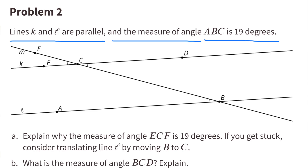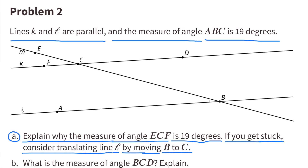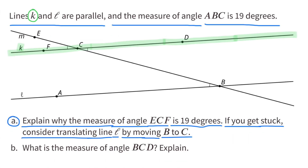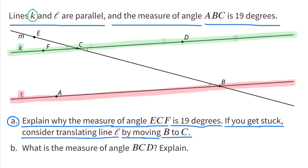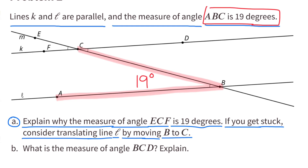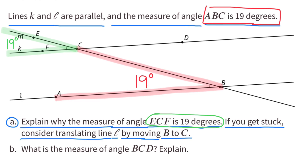Number 2. Lines K and L are parallel, and the measure of angle ABC is 19 degrees. A: explain why the measure of angle ECF is 19 degrees. If you get stuck, consider translating line L by moving B to C. I highlighted line K in green and line L in red, and you can see that they're parallel. Now I'm highlighting angle ABC in red. They told us that angle ABC is 19 degrees. Angle ABC and angle ECF are the same measure — if you were to trace them and lay one on top of the other, you would see that they are the same measure. They're both 19 degrees.